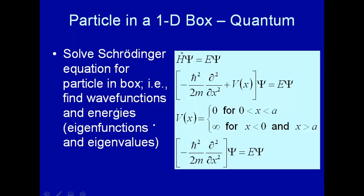What we're going to do is solve the Schrödinger equation, H psi equals E psi, using the Hamiltonian operator, which we're going to obtain by considering the classical Hamiltonian.